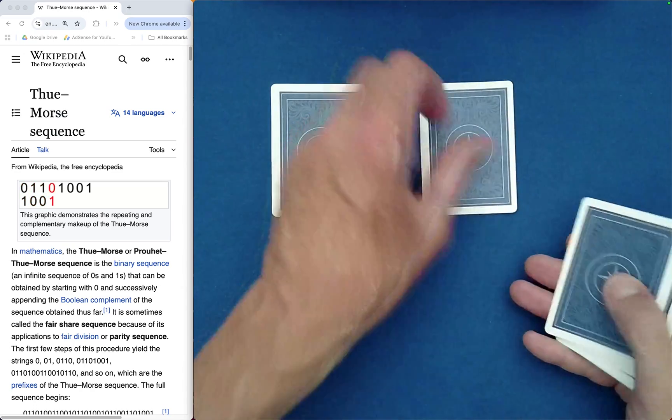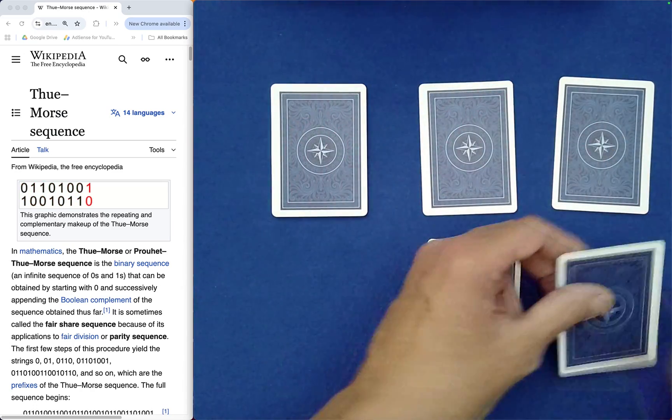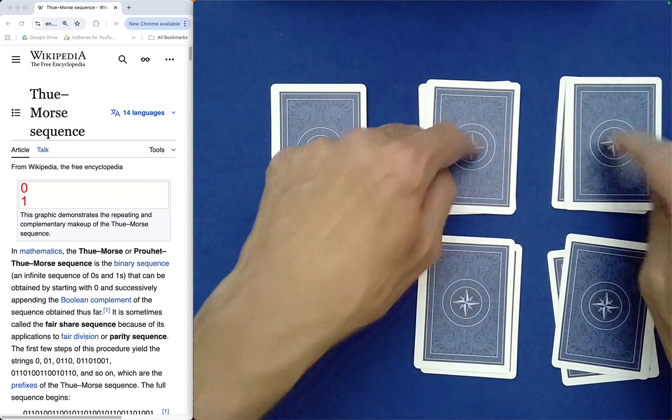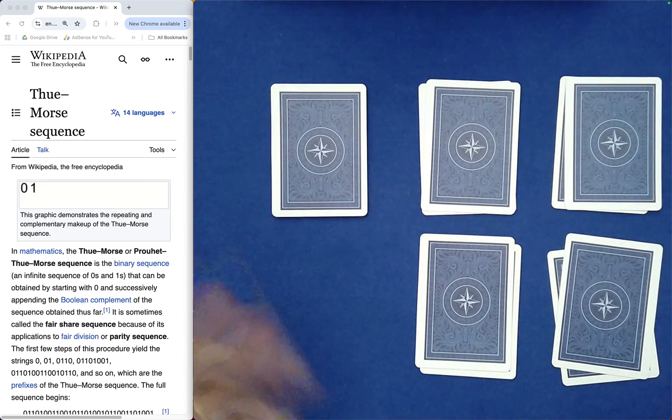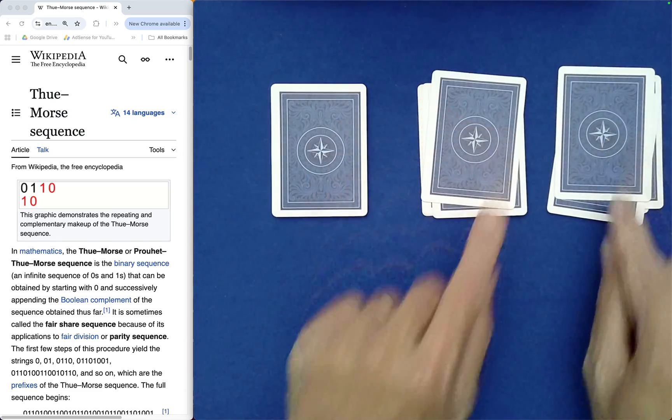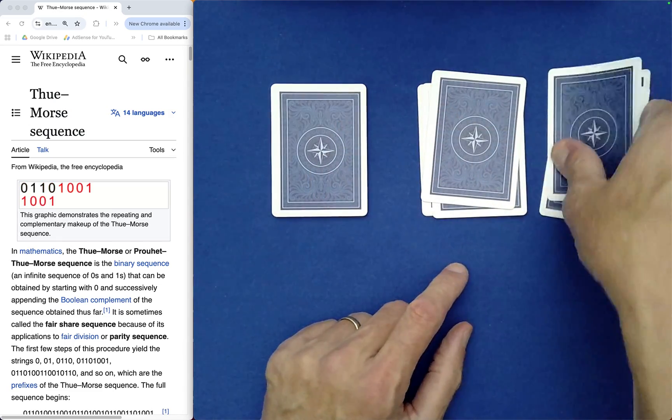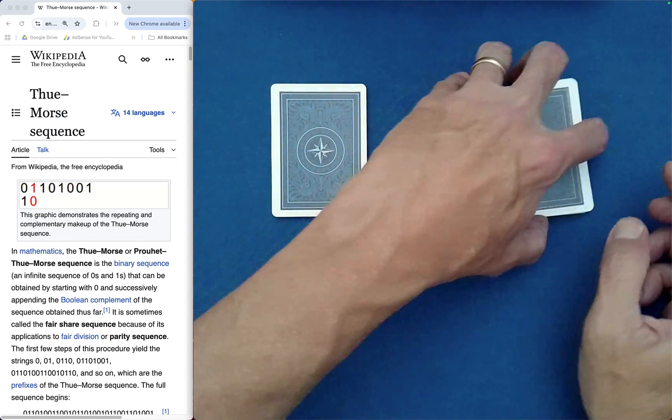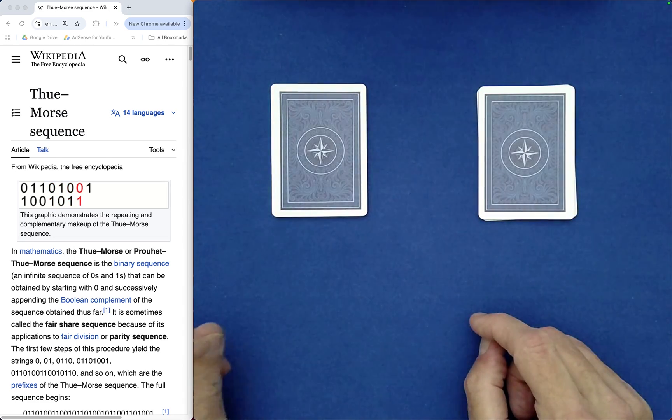We can also deal out into four piles like this. Would you like the top row stacked on the bottom or vice versa? You want bottom on top. How would you like these stacked? Right on left. Would you like to do any more of those? You don't.